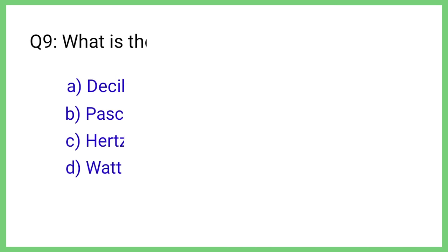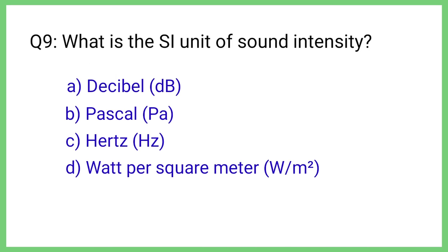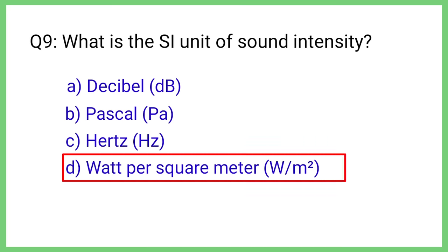Question No. 9. What is the SI unit of sound intensity? The correct answer is Option D. Watt per square meter.